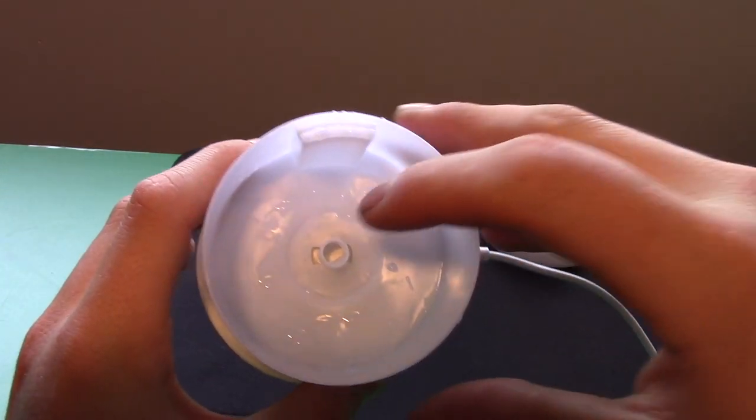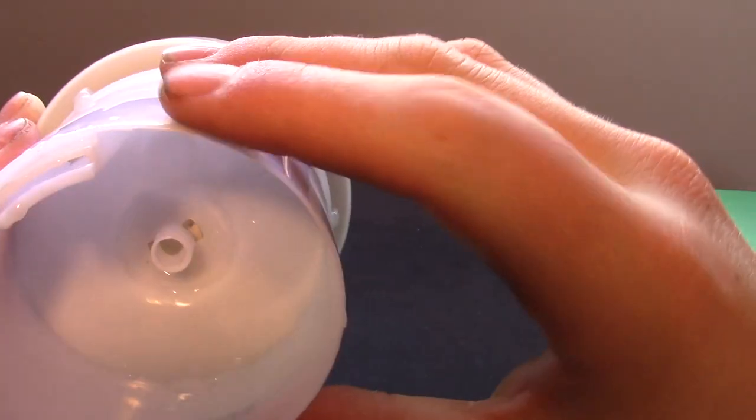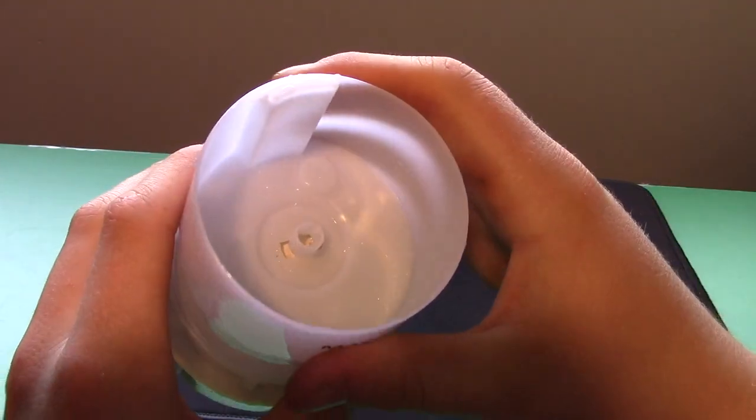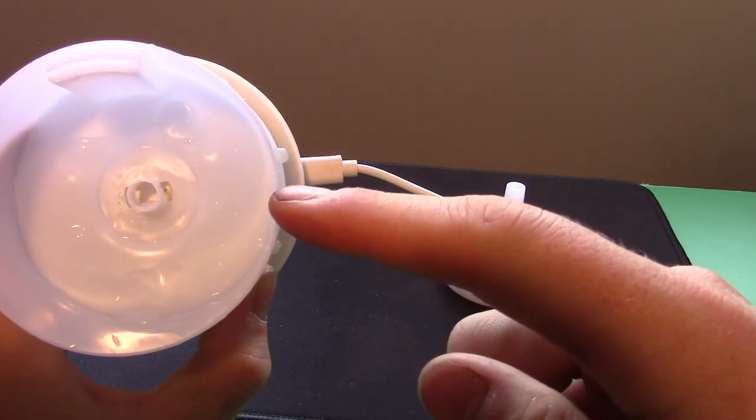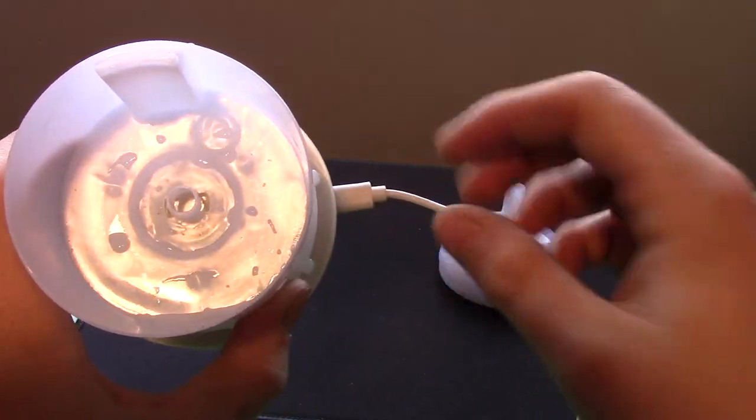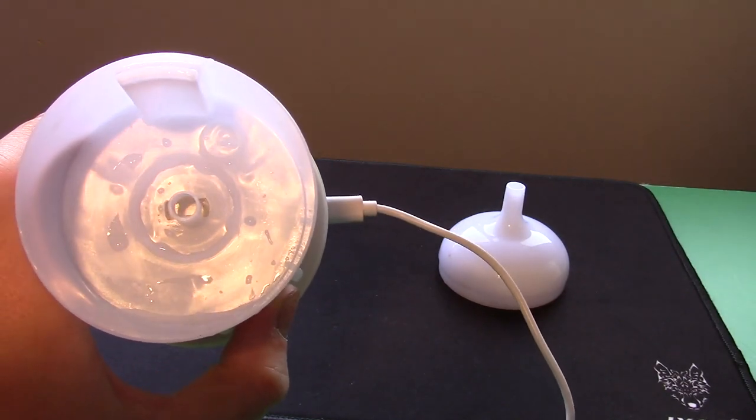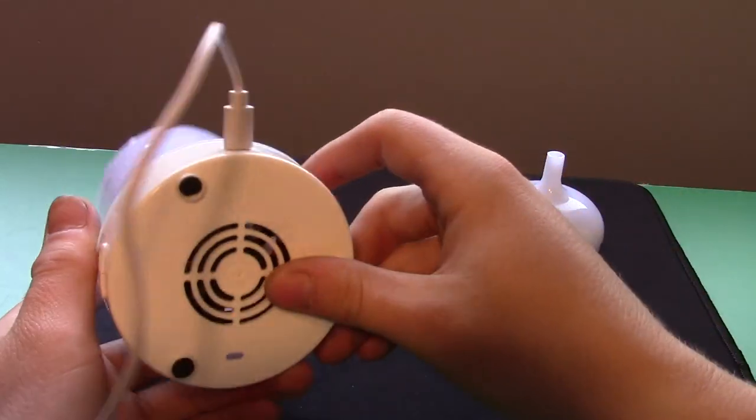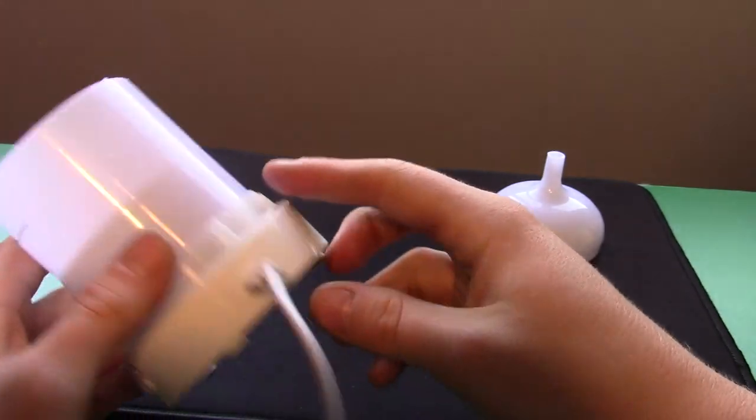So inside here, under here, you can see there's this little disc. That's the ultrasonic disc in there. This ultrasonic disc vibrates extremely fast, causing some of the water to turn into water vapor. And it has this fan on the bottom to help blow the mist out.